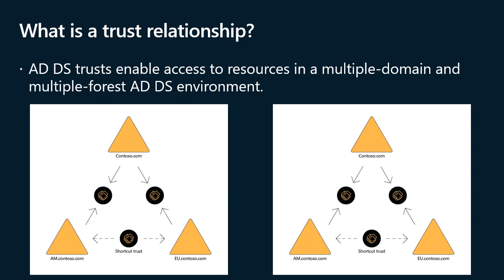When you have multiple domains or forests, you need trusts to provide users in one domain with secure access to resources in another domain. In a multiple domain ADDS forest, by default, domains form a tree-like structure with a two-way transitive trust between directly adjacent domains, meaning a path of trust exists between all ADDS domains in the same forest. Active Directory supports several trust types: External trust — a non-transitive one-way or two-way trust for resource access with an individual ADDS domain in another forest; Realm trust — transitive or non-transitive, for authentication between a Windows Server ADDS domain and a Kerberos v5 realm using a directory service other than ADDS; Forest trust — a transitive one-way or two-way trust allowing two forests to share resources; and Shortcut trust — a non-transitive one-way or two-way trust used to reduce authentication time between non-adjacent domains in the same multi-domain ADDS forest.